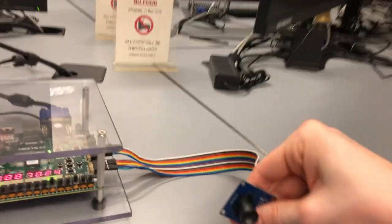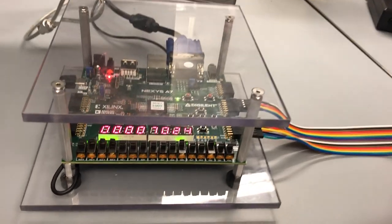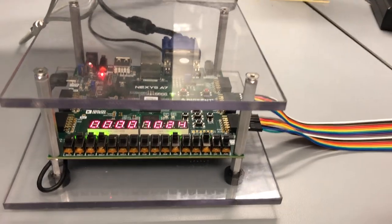And this is the camera that we're using and it's just hooked into the FPGA through the pins and then we control the different settings with the switches down here.